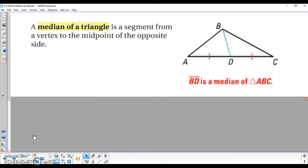No protractor needed here. The median, very simply, is going to connect two parts of your triangle. It's going to connect the vertex to the midpoint of the opposite side. And that's it.